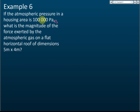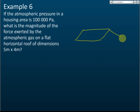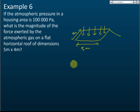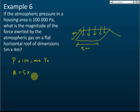Example six: if the atmospheric pressure in a housing area is 100,000 pascal, what is the magnitude of the force exerted by atmospheric gas on a flat horizontal roof of dimensions 5 meters by 4 meters? The pressure is 100,000 pascal and the area is 5 multiplied by 4, which is 20 meter squared.